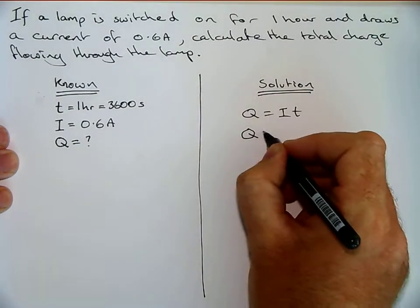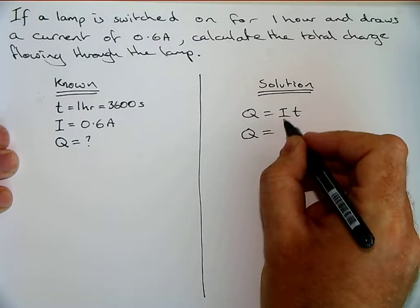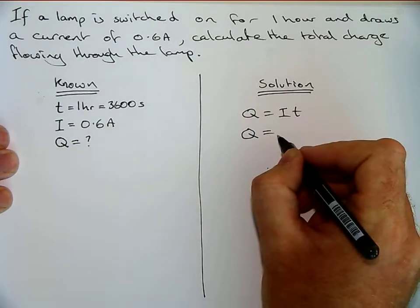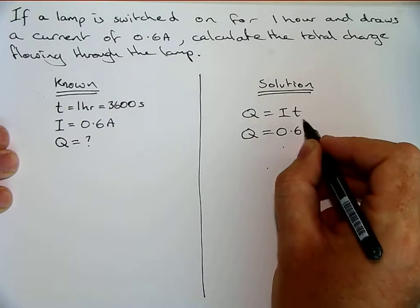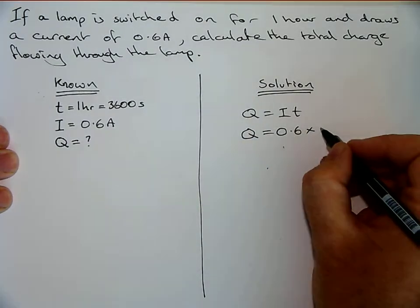Underneath we write the exact same thing, except this time we turn the letters into numbers. So I is 0.6, and the T is 3600.